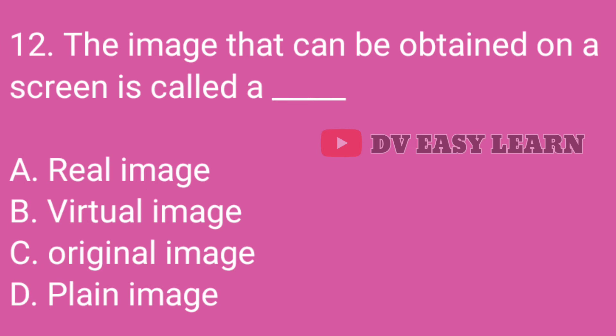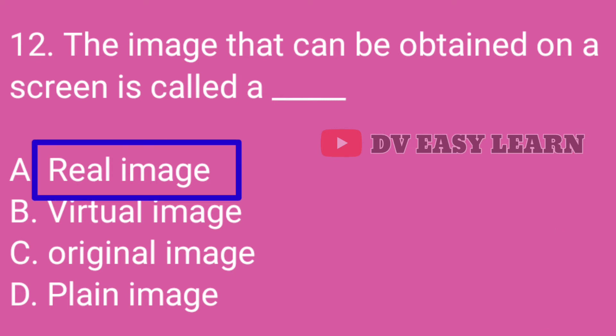Question No. 12: The image that can be obtained on a screen is called a — Correct answer: Real image.